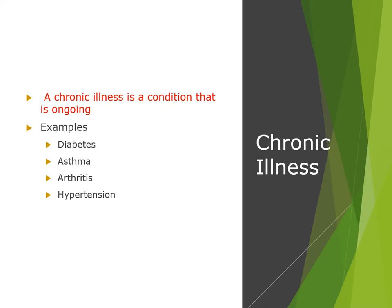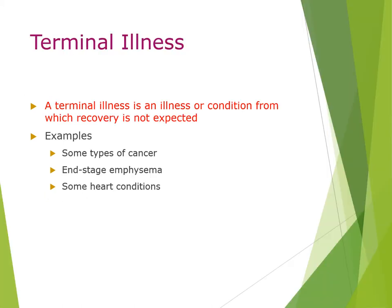A chronic illness is a condition that is ongoing — for example, diabetes, asthma, arthritis, and hypertension. A terminal illness is an illness or condition from which recovery is not expected. Examples include some types of cancers, end-stage emphysema, and some types of heart conditions.